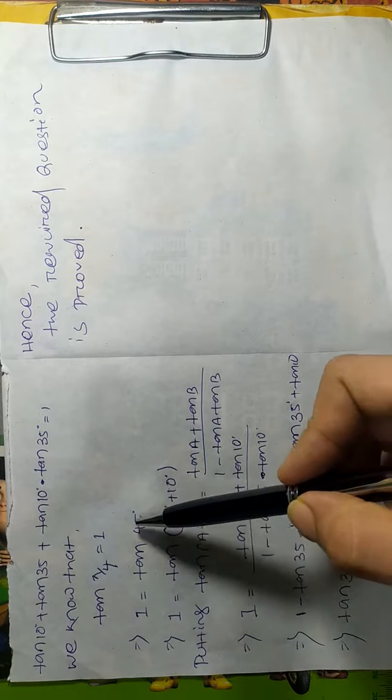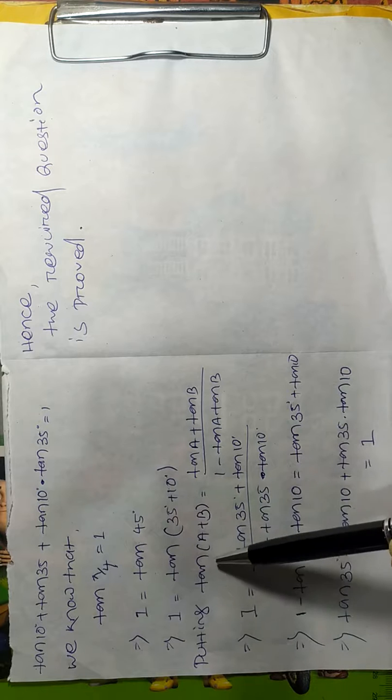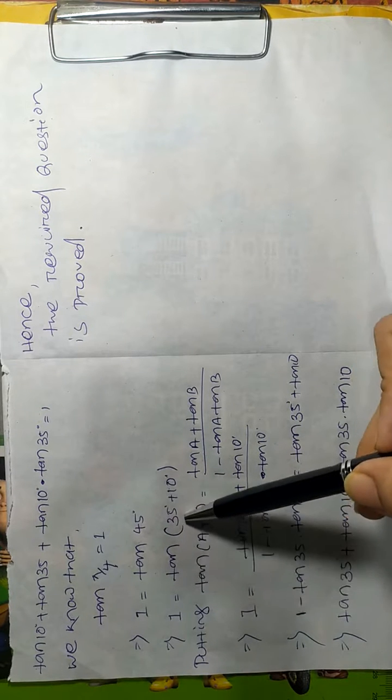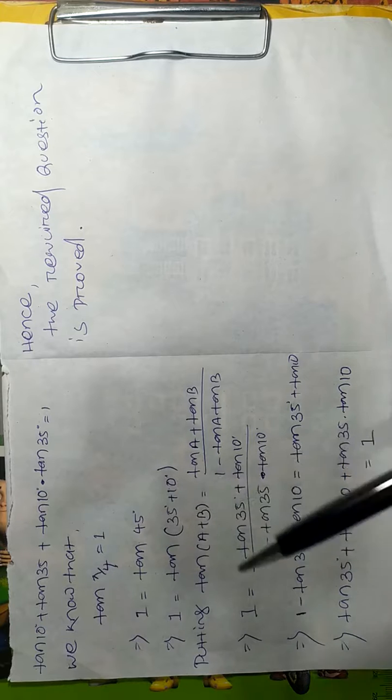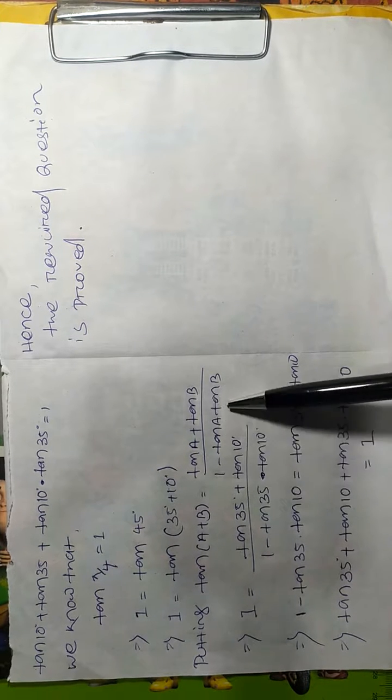After that, we have to put tan(a + b) formula instead of tan 35° + tan 10°, which is tan a + tan b divided by 1 - tan a × tan b.